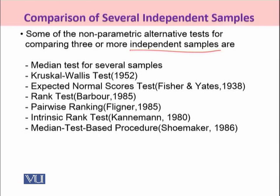Even among samples and within samples, observations are independent of each other. The non-parametric alternatives of ANOVA — where equality of several means is to be tested but ANOVA assumptions are not met — can be used instead. The first non-parametric alternative is the median test for several samples. When we have two samples we can compare their medians using the median test, and there is an extension of that test for several independent samples.